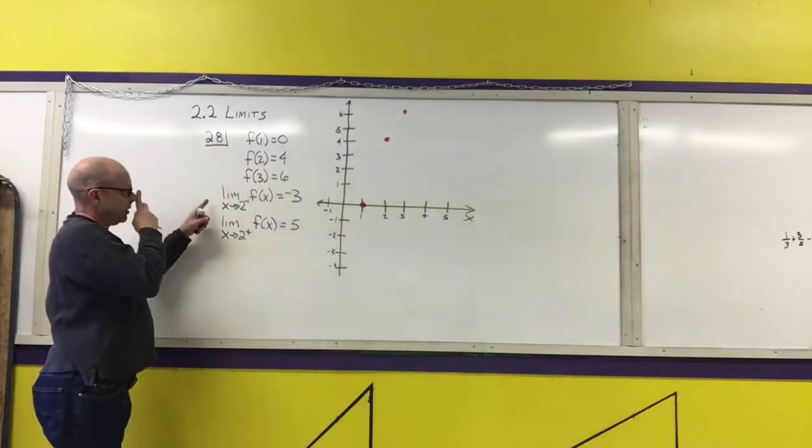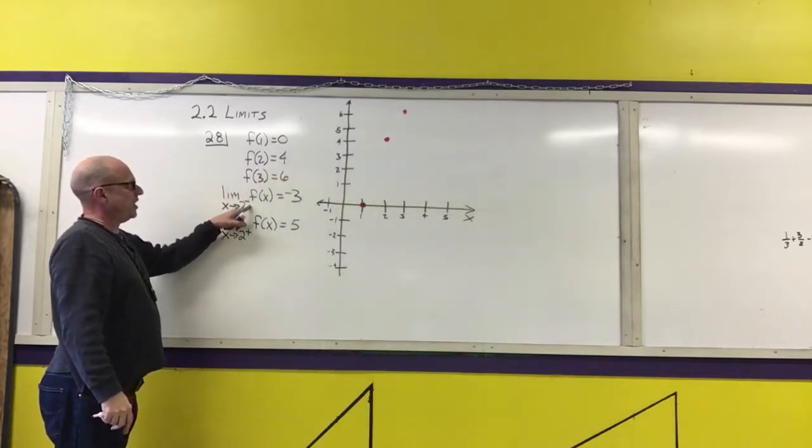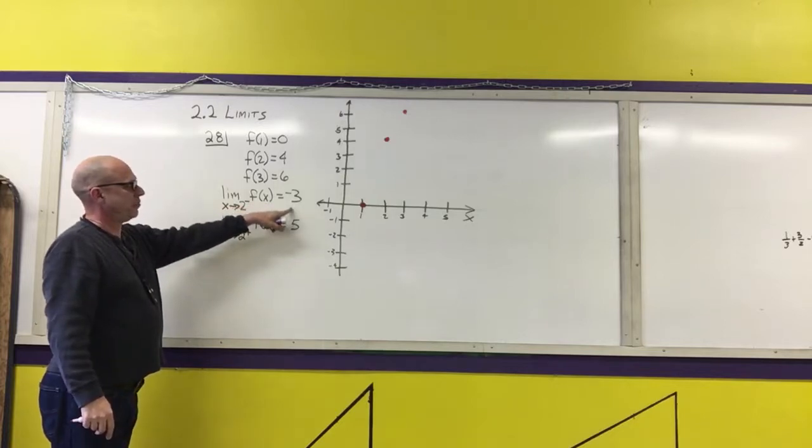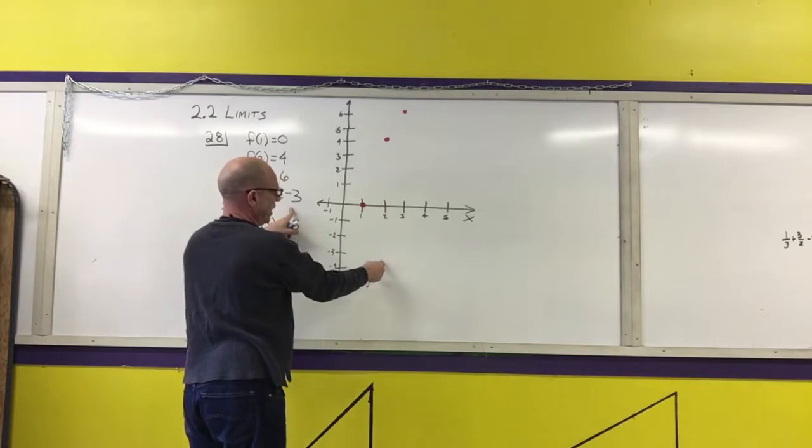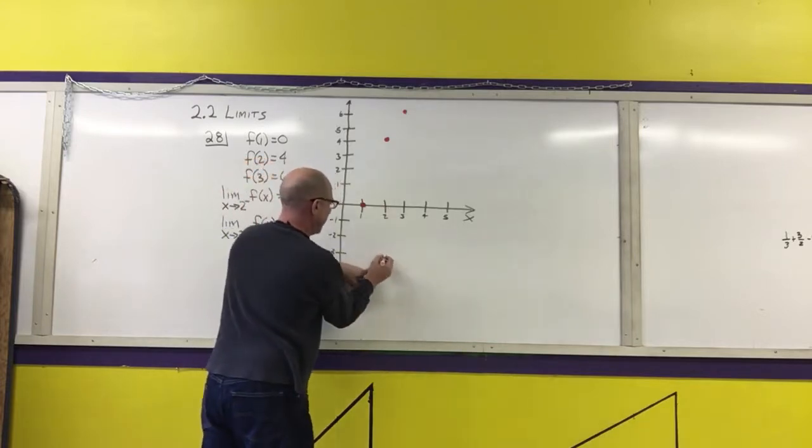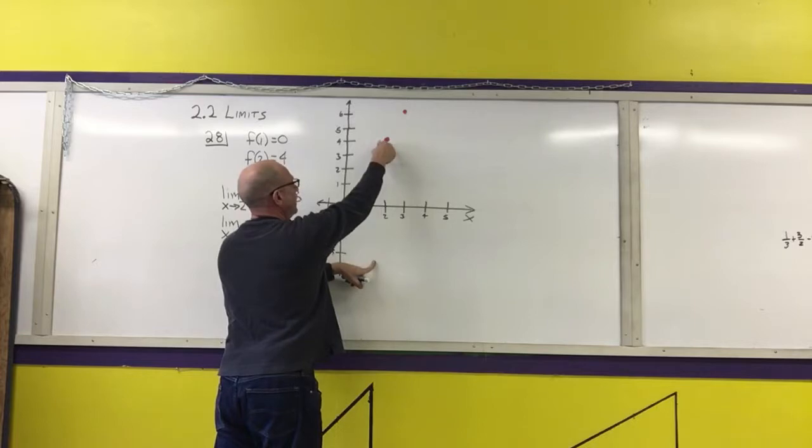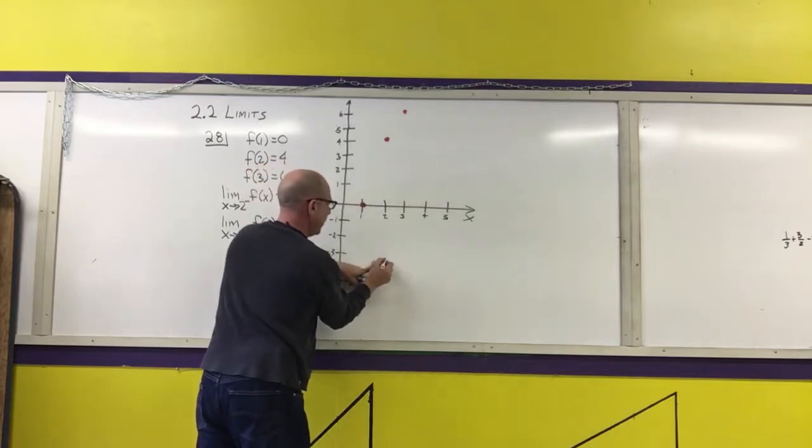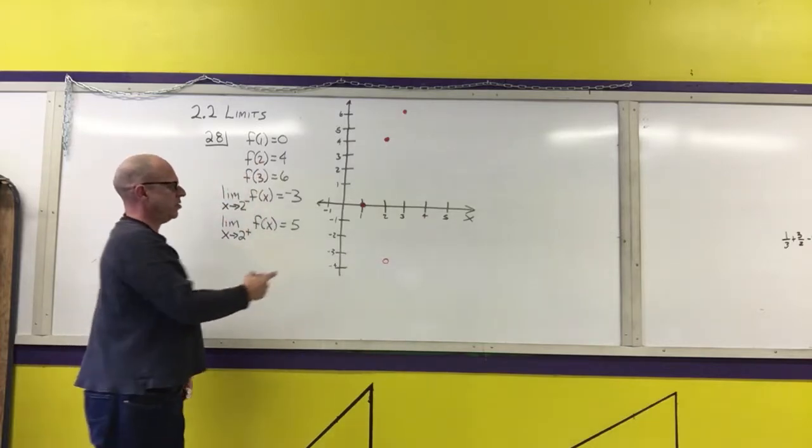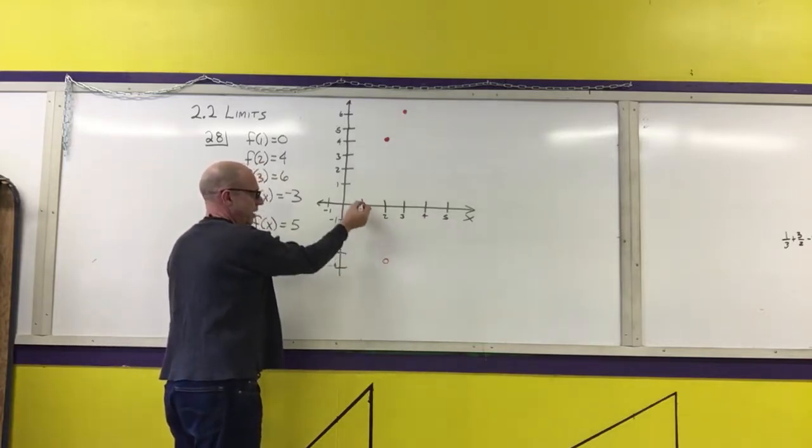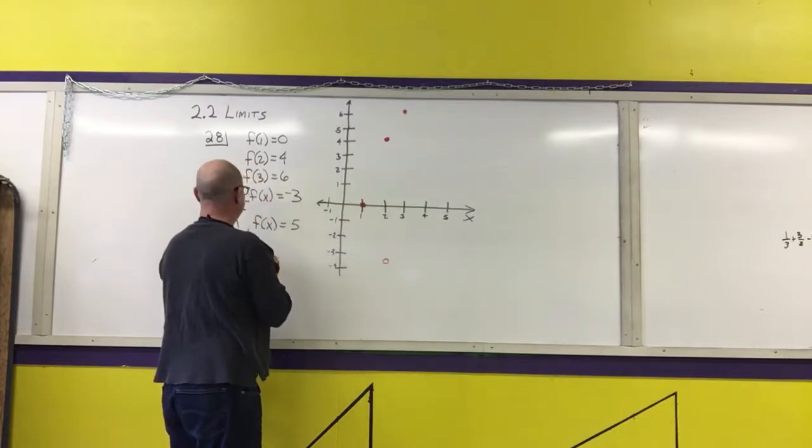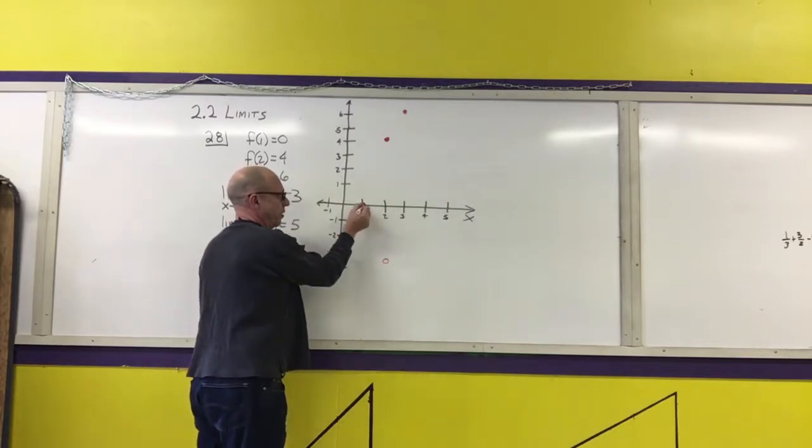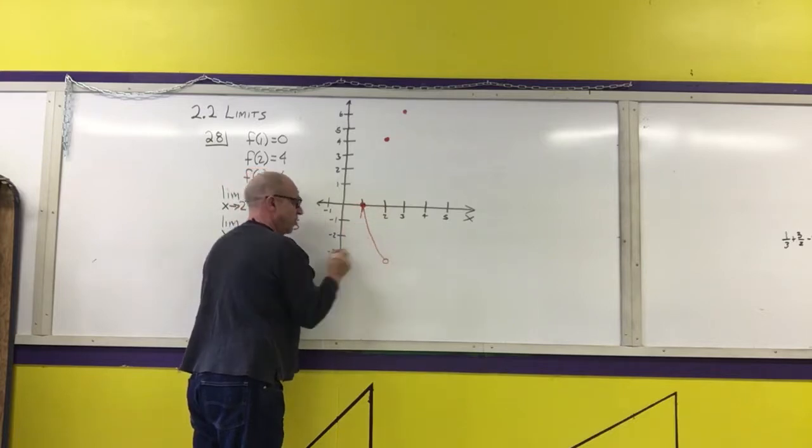It says the limit as x approaches 2 from the left is negative 3. So while I'm approaching 2 from the left and it's approaching negative 3, I'm going to put a circle there because I already have the value of 4 up there. Anything I do that approaches here means my graph as x approaches 2 will approach negative 3. So I'm going to make a smooth curve to connect those points.